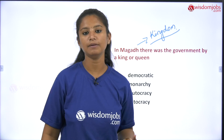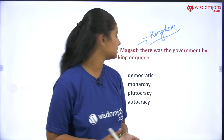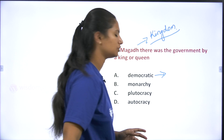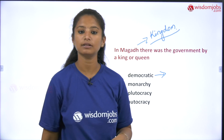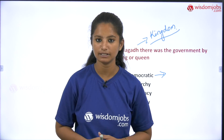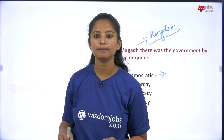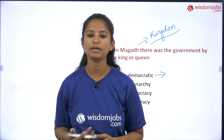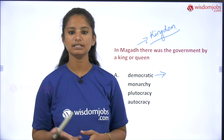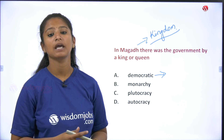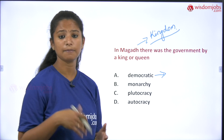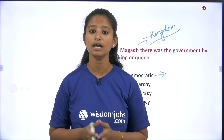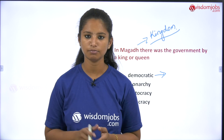Our current system of government is called a democracy. A democratic country is one where there is a Prime Minister and a President, and under them are Home Ministers, Central Ministers, MLAs, MPs, MLCs, and Legislative Council members. All of these together make up what we call a democratic country.